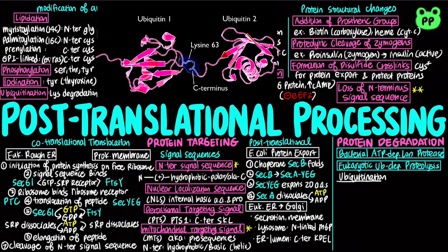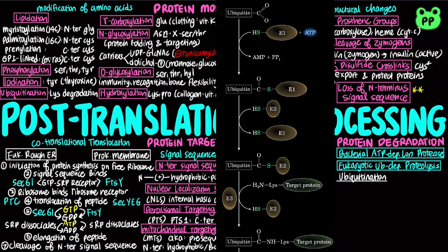Ubiquitination involves three enzymes. E1, the activating enzyme, attaches the free carboxyl of ubiquitin's C-terminus glycine via a thioester bond. Ubiquitin is then transferred to E2, the conjugating enzyme. E3 ligase catalyzes the transfer of ubiquitin from E2 to the target protein, linking ubiquitin through an amide isopeptide bond to the epsilon-amino group of a lysine residue of the target protein.